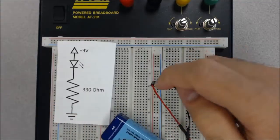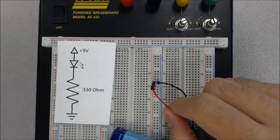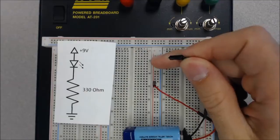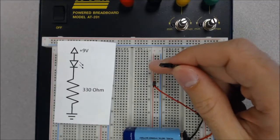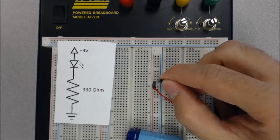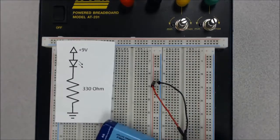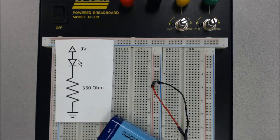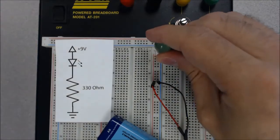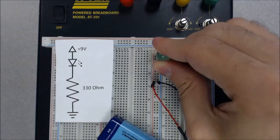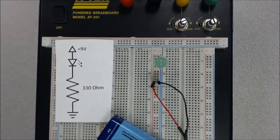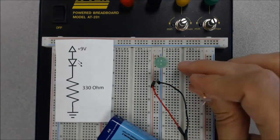So one thing we wouldn't want to do is we wouldn't want to put this red wire and the black wire into the same vertical column here of holes because that would create a short circuit. So I have the battery connected, now what I need to do is I need to put my LED in the circuit so that I can get some current running down through there.